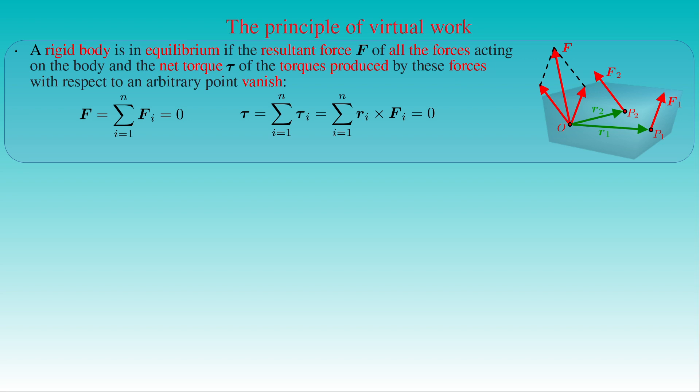For brevity, we show only two forces F1 and F2 applied on the body at points P1 and P2 described by position vectors R1 and R2 with respect to an arbitrary point O, and the resultant force F. Since the equations describing the condition of equilibrium contain both unconstrained and constrained forces, it is often very complicated to solve such problems, especially for systems consisting of several parts like engines or machines. It is therefore crucial to find a principle of mechanics free from constrained forces to reduce the complexity of equilibrium problems.